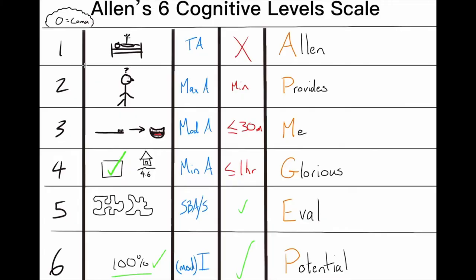Now let's consolidate all of this visual and auditory information into a quick and easy visual that makes it easy to remember the different levels and apply them when needed. I want to note that there is technically a level zero, which means the person is in a coma, but the main six levels we've been discussing are what we'll focus on here.